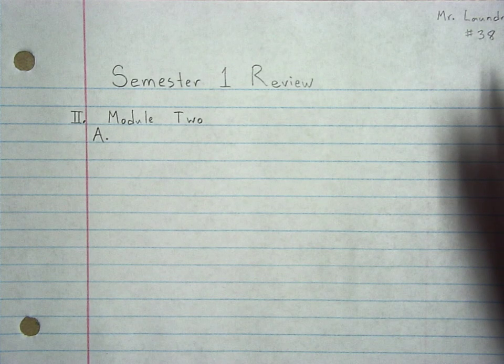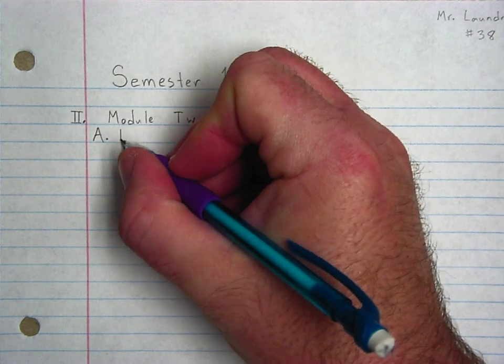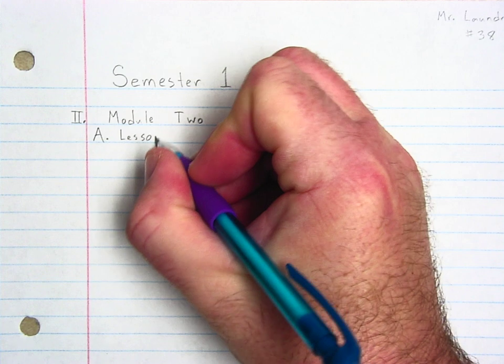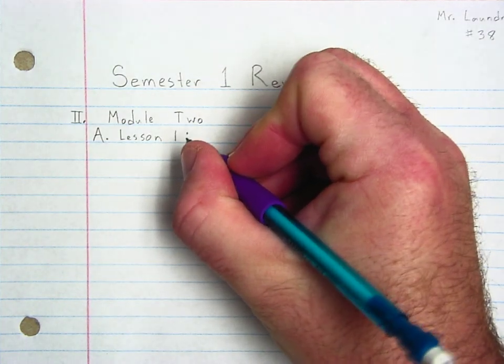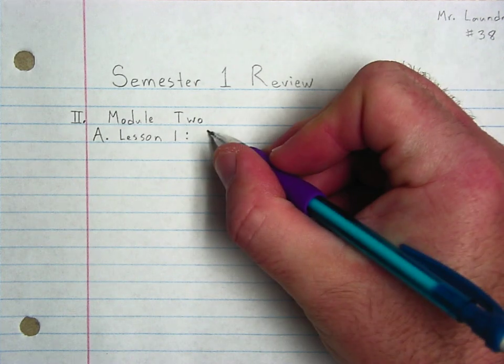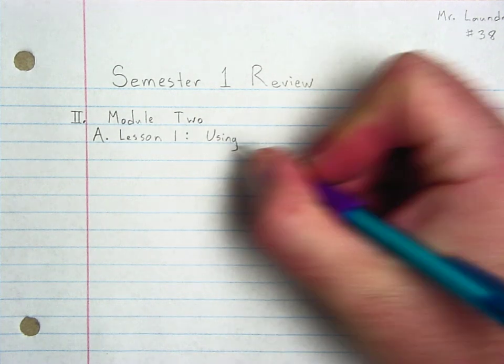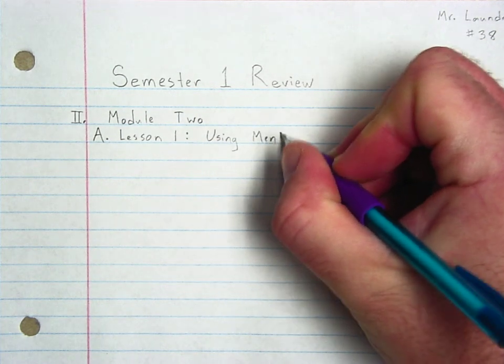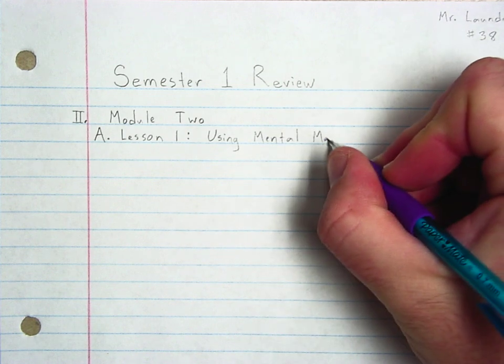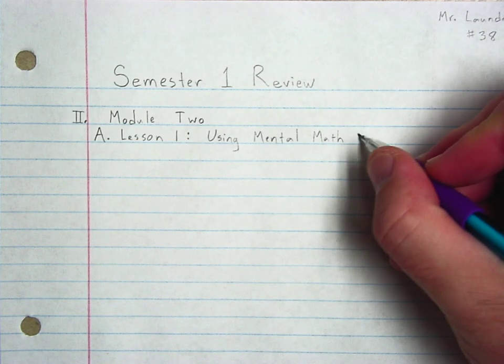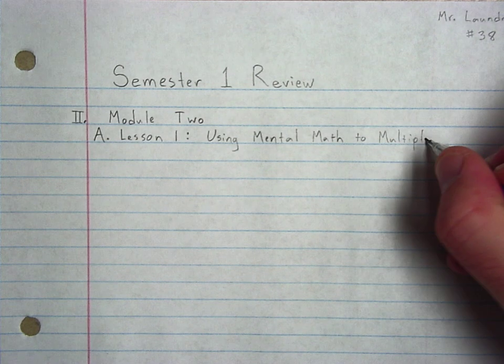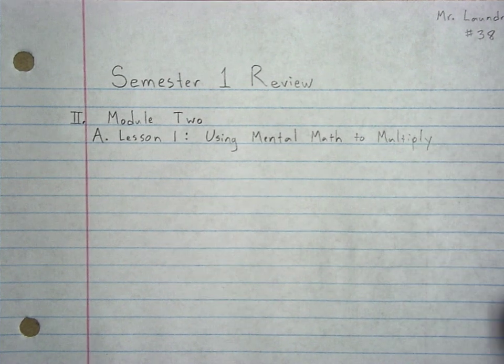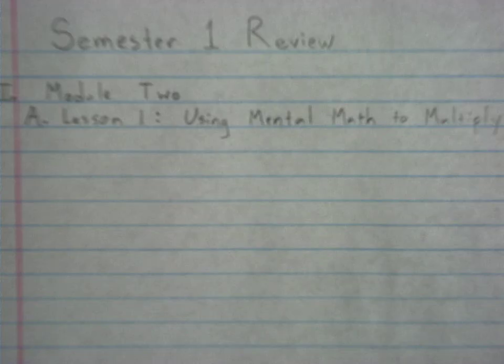First off, in module two. Module two was multiplication and division. We started with a lot of discussion about using mental math. Now, obviously, you can't always use mental math. I'm always telling you to use graph paper. Graph paper is super important, especially for this. But there are times when you can take a little bit of a mental shortcut and save yourself some time.